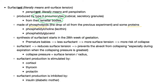Surfactant also contains some proteins, because proteins are active and we need them. The lipids involved are lecithin, phosphatidylcholine, and phosphatidylglycerol. These will be the correct choices on your exam. When asked which substance is used to make surfactant, the correct answer will be one of these three: phosphatidylcholine, lecithin, or phosphatidylglycerol.